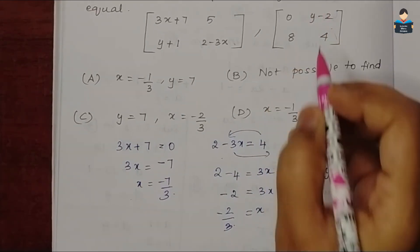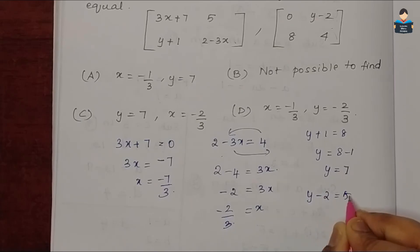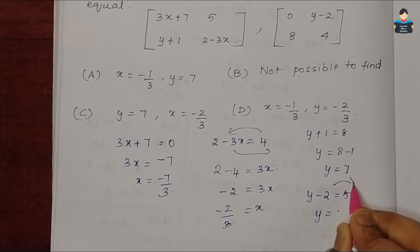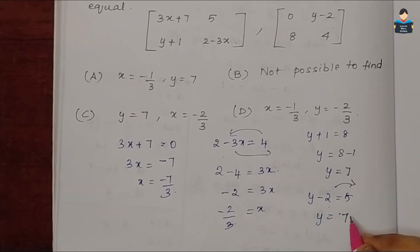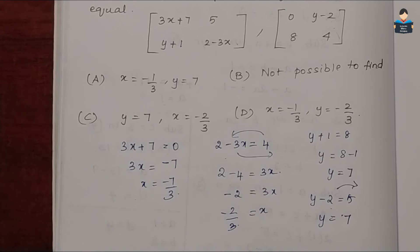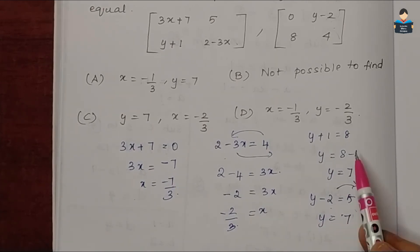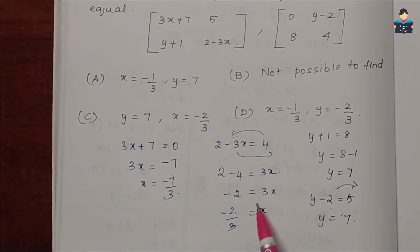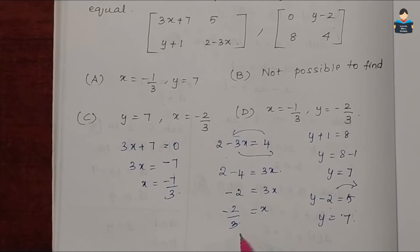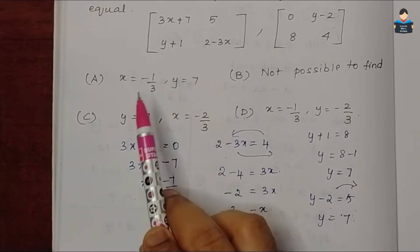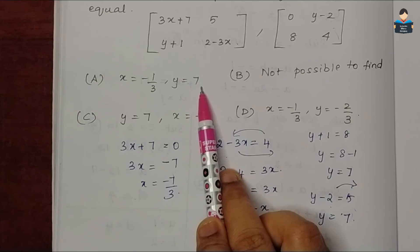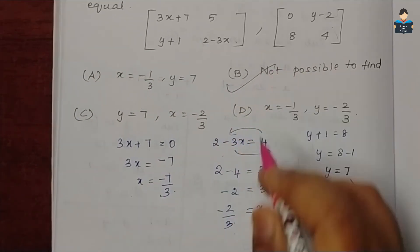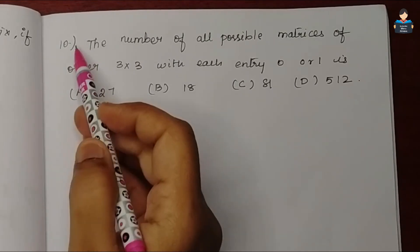Although y equals 7 is consistent, we cannot find a single consistent value of x from the two x-equations. Therefore the value of x and y is impossible to determine simultaneously, so option B is the answer.